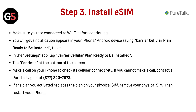Step 3: Install eSIM. Make sure you are connected to Wi-Fi before continuing. You will get a notification on your phone saying Carrier Cellular Plan Ready to be Installed — tap it. In the Settings app, tap Carrier Cellular Plan Ready to be Installed, then tap Continue at the bottom of the screen. Make a call on your iPhone to check cellular connectivity. If you cannot make a call, contact a PureTalk agent at 877-820-7873. If the plan you activated replaces the plan on your physical SIM, remove your physical SIM, then reinsert it into your iPhone.